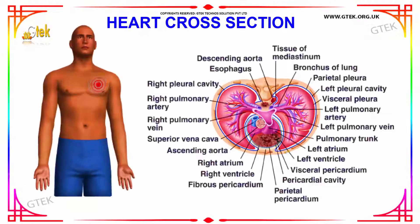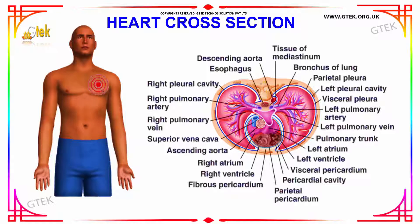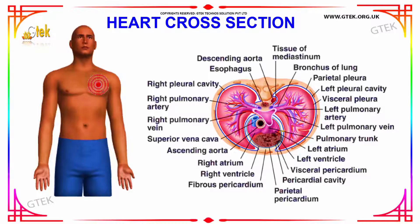Now you are able to see the cross-sectional view of the human heart. The two lungs can be found here, and this is the spine region. You can see the superior vena cava and the ascending aorta through which blood is pumped in and out. Your left and right atrium and left and right ventricle are also visible.